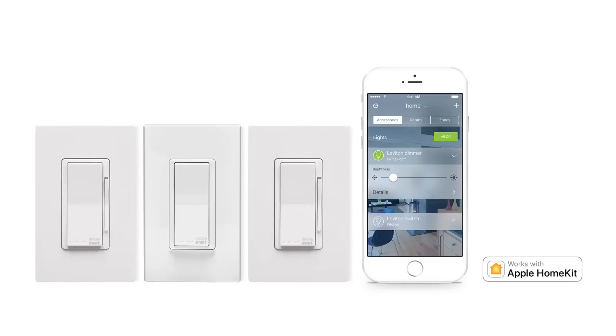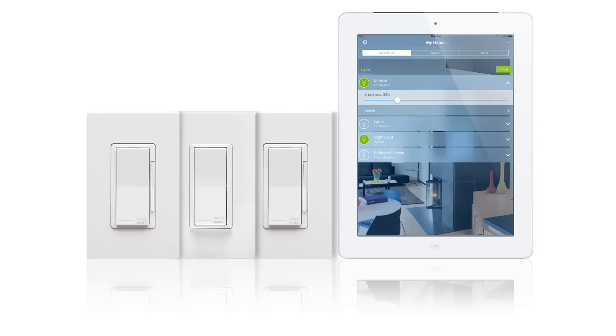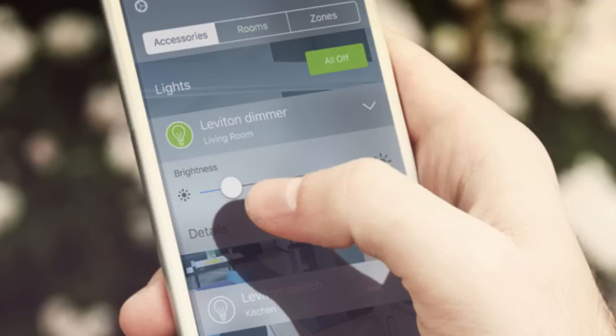For the DH1KD, please download the Decora smart home app to an iOS device and follow the in-app wizard prompts to easily and securely connect your Leviton HomeKit enabled devices. You can also customize the experience with variable fade rates, brightness levels, and bulb types.